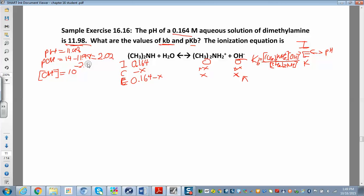10 to the negative 2.02. And then we work that out. What do we get? 9.55 times 10 to the negative 3. And that is what X equals. That's equal to our X. So I can plug that in wherever I see X. So I have here at equilibrium 0.164 minus 9.55 times 10 to the negative 3. And then this is also just going to be 9.55 times 10 to the negative 3. And over here you have 9.55 times 10 to the negative 3.